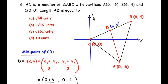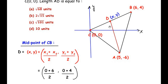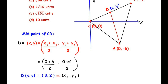The midpoint formula gives coordinates of D as (x1 + x2)/2, (y1 + y2)/2. Taking B and C as (x1, y1) and (x2, y2), we add the x-coordinates: (0 + 6)/2 = 3, and the y-coordinates: (0 + 4)/2 = 2. So the coordinates of point D are (3, 2).